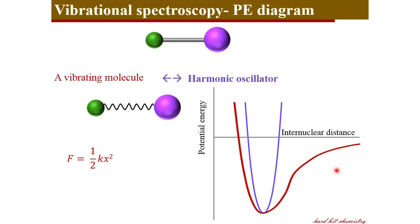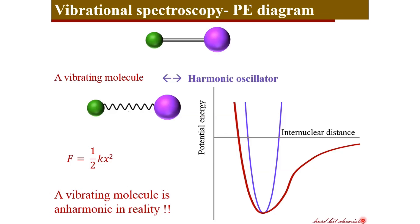At least at the higher part of the curve, it deviates from the parabolic behavior. That means real molecules are not harmonic oscillators — they are anharmonic oscillators. As per the regular strategy of quantum mechanics, we first assume the molecules to be a harmonic oscillator to make the system easier to understand, derive expressions for energy, see what happens during energy transitions, and then extrapolate this information onto the case of an anharmonic oscillator to see the real molecules.